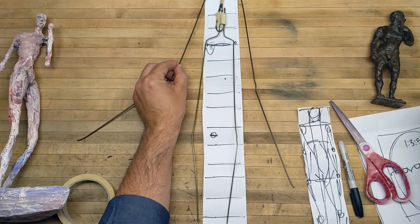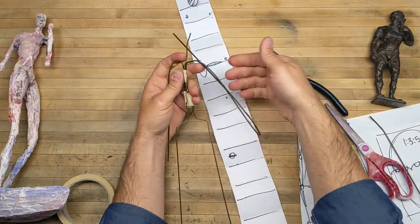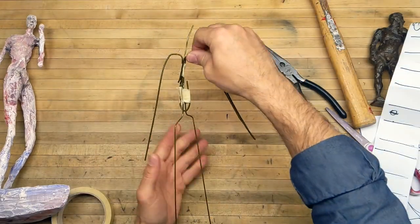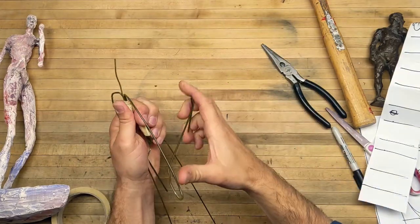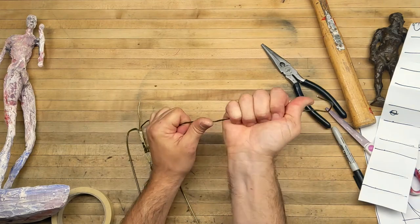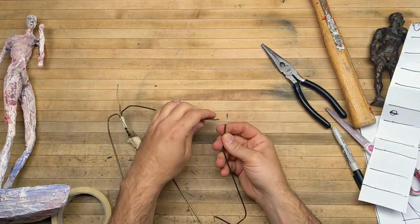Now if you have pliers at home it's going to make this a lot easier - go ahead and snip that. If you don't have pliers, you could just bring that up, fold it over, pull that in. You could even potentially fold this back and forth - boom.